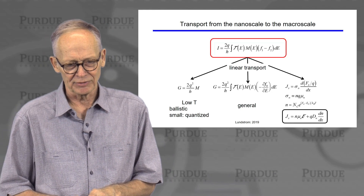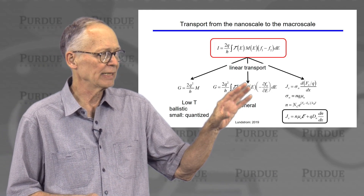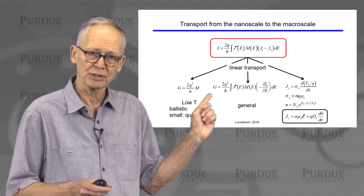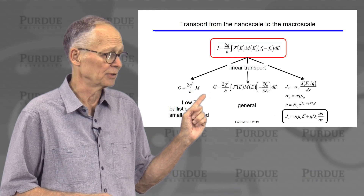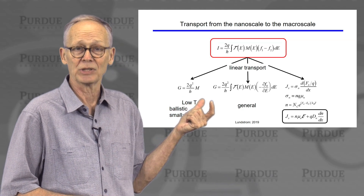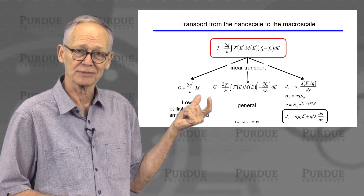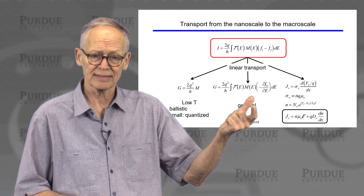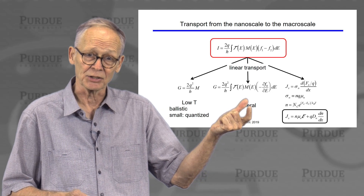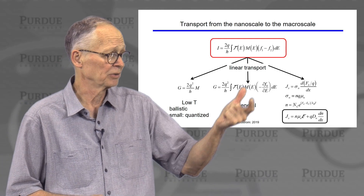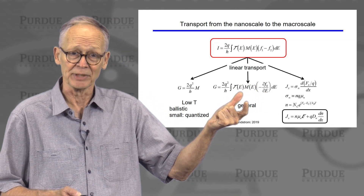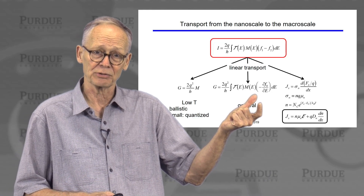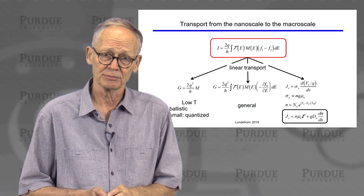This is really the subject of another talk, but I'll point out that this is a convenient framework because for very short, ballistic devices where transmission is one and we can count the number of channels, we get quantized conductance in discrete units of 2q²/h. For larger devices, we can express conductance with M being a much larger number of channels — perhaps counted per square centimeter. This expression for conductance is equivalent to what you'd get from a general solution to the Boltzmann transport equation, just written differently to break things into transmission and number of channels.